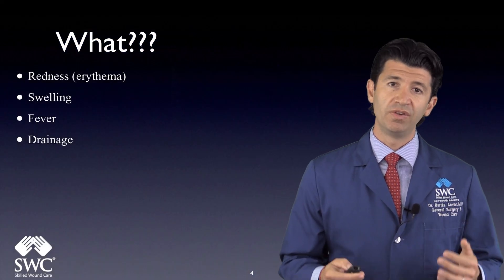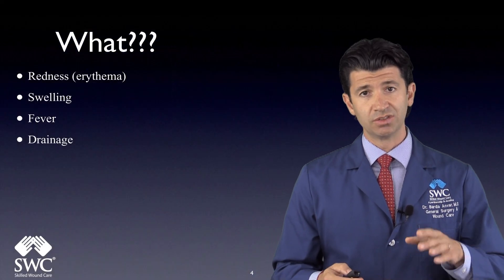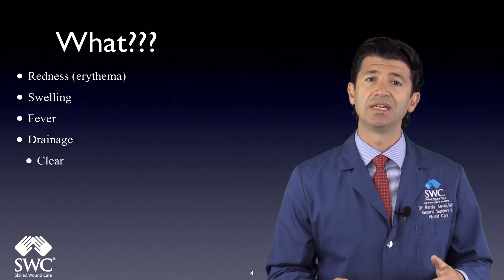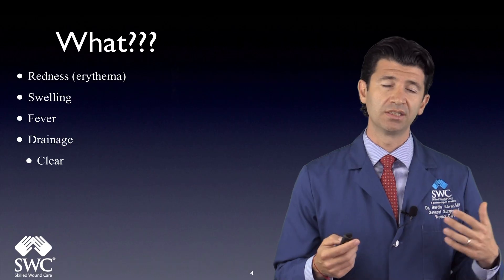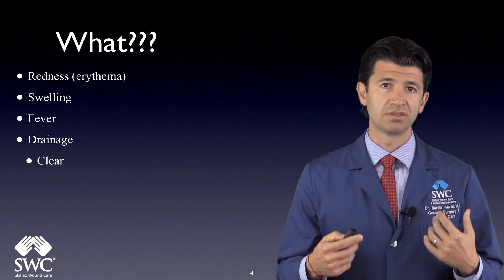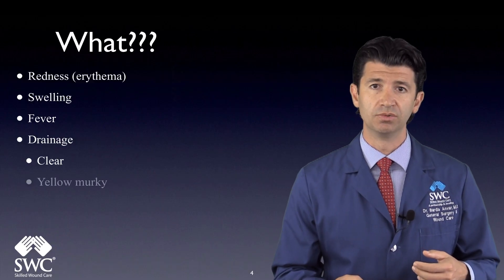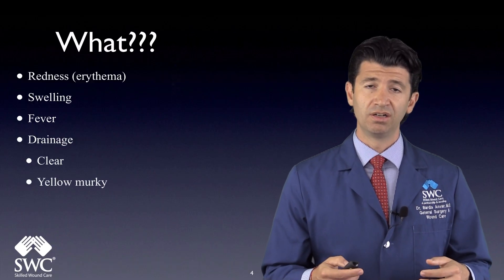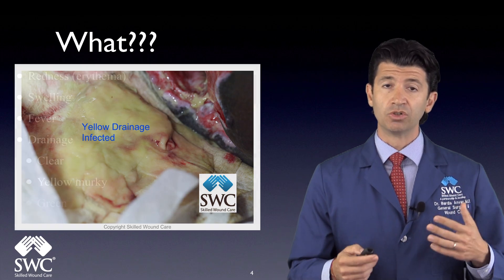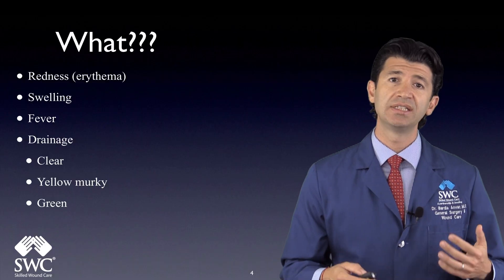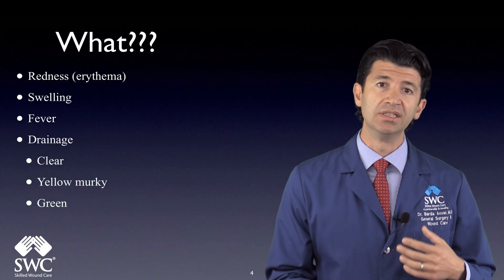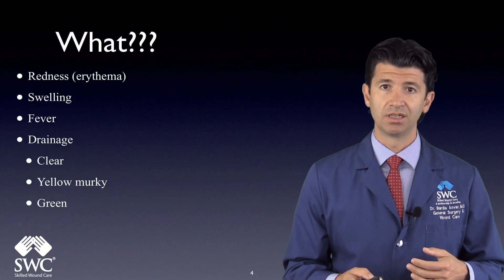Drainage from wounds is very suspicious for wound infections, especially certain types of drainage. Clear drainage does not really indicate a wound infection — it could be because you may be near a joint capsule, or sometimes serous fluid coming out from chronic wounds. However, yellow murky fluid will indicate possible bacterial infection. Green fluid is usually indicative of pseudomonas infection and should be treated differently than usual yellow drainage.